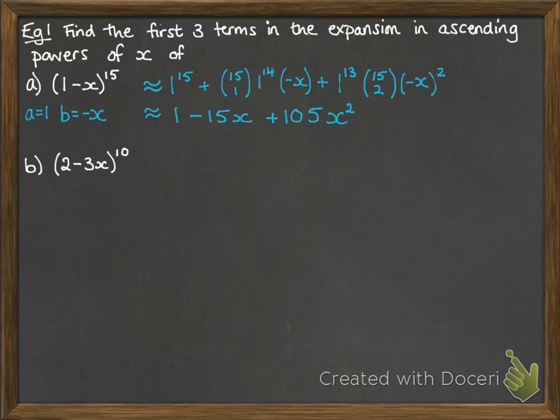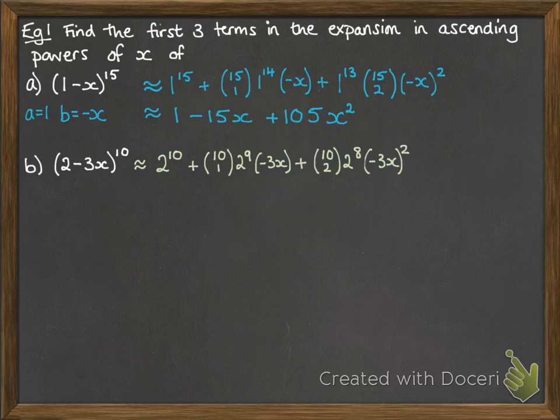Now the 2 minus 3x to the 10. That's approximately equal to 2 to the 10. 10 choose 1. 2 to the 9 minus 3x. 10 choose 2. 2 to the 8 times minus 3x squared. We're only looking for the first three, so we'll stop there. And then working out those numbers, we've got 1,024 minus 15,360x and 103,680x squared.